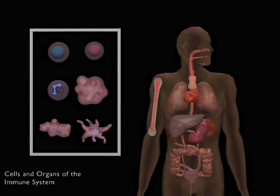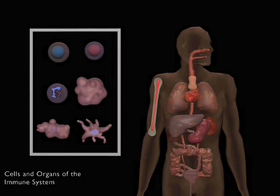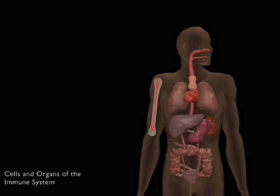The cells which mediate immune reactions are the white blood cells, or leukocytes, that are distributed throughout the body in the various lymphoid organs, including the lymph nodes, the spleen, and the Peyer's patches in the gut.